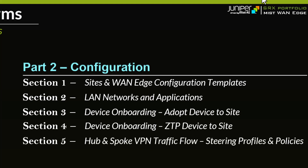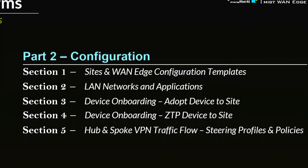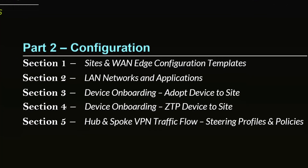Section five, we look into hub and spoke VPN traffic flow and specifically how to configure steering profiles and the different policies using those steering profiles. Steering profiles are used to define how many paths and how many overlays — IPsec tunnels — each specific destination will be using.